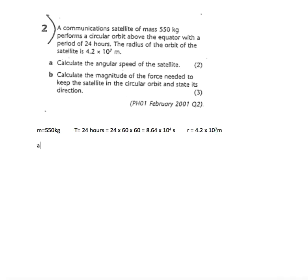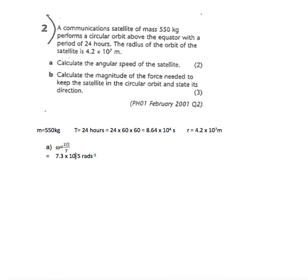The first thing we're asked for is the angular speed. We look at the relationship between omega and the period, since we know the period and want omega. Omega equals 2 pi over T, which gives us — working that out with T in seconds — 7.27 times 10 to the minus 5 radians per second.